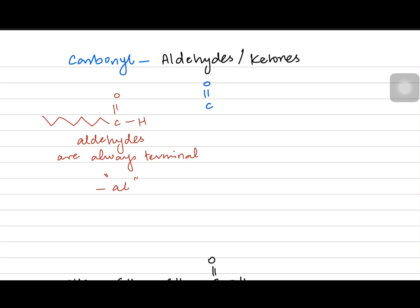Ketones have the carbonyl functional group somewhere in the middle, so you do have to specify their position. You number the chain in a way that the ketone gets the smaller number.